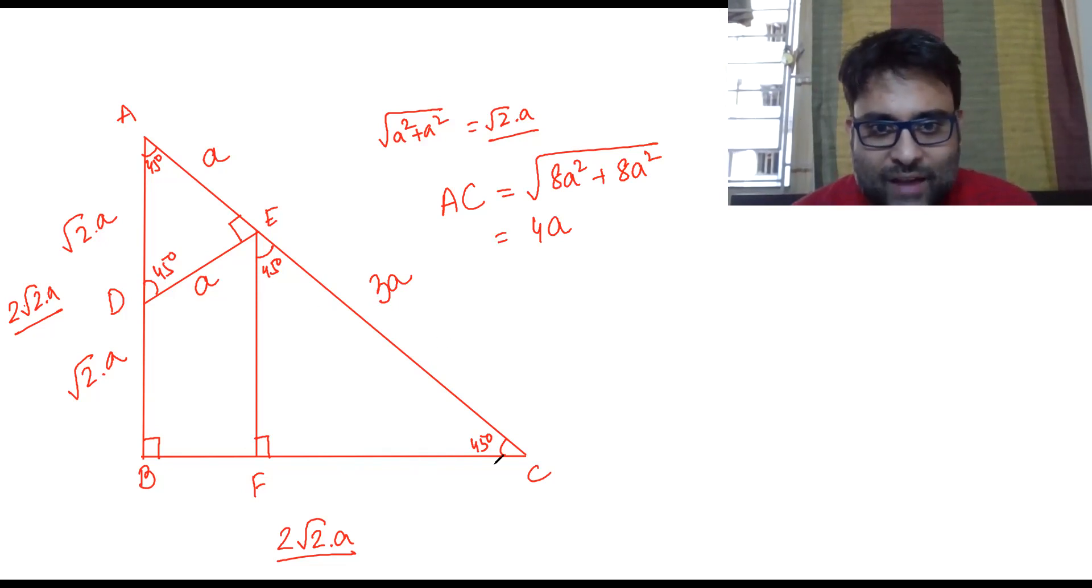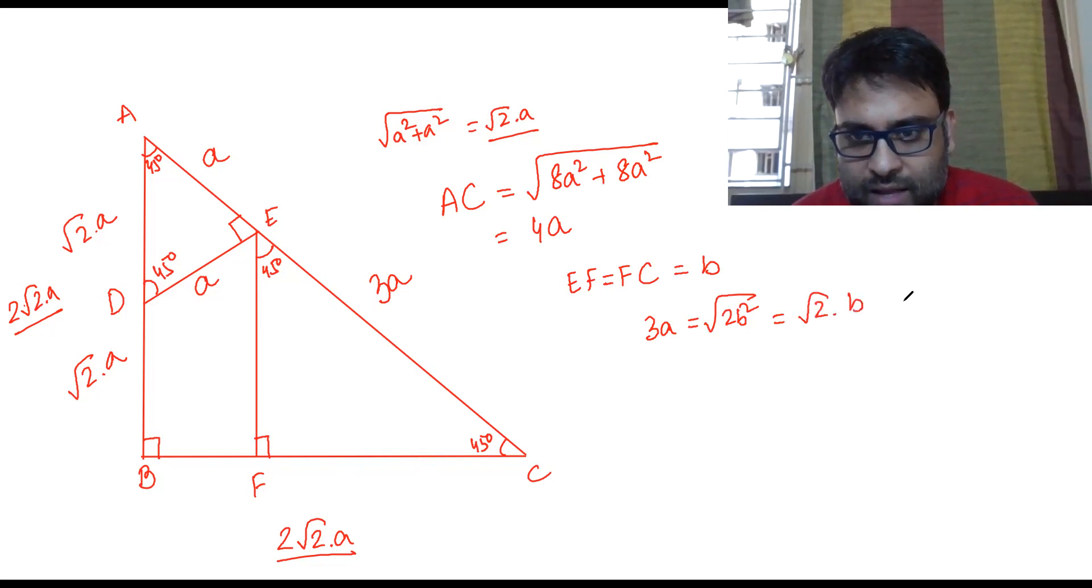Let EF equal FC equal b. So 3a equals root 2b squared, which means √2b. Therefore b equals 3 by root 2 times a.